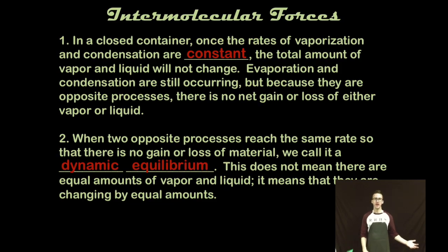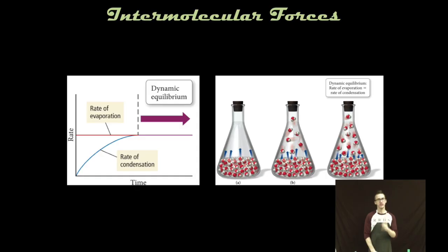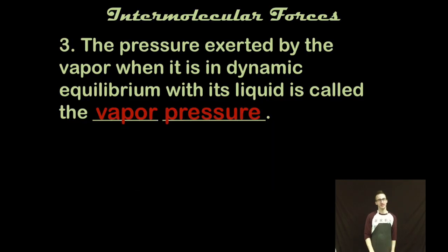The processes are still happening, but because they're opposite processes, there's no net gain or loss of either phase. Essentially, we say that the two processes of vaporization and condensation are in dynamic equilibrium. And when a substance has reached that point of dynamic equilibrium, and when a substance reaches that point of dynamic equilibrium, we can measure what's called its vapor pressure.